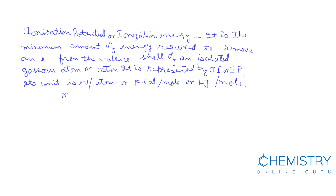Suppose we have a gaseous atom M. The energy required to remove an electron is ionization energy. The energy required to remove the first electron from an isolated gaseous atom is the first ionization energy, that is IE1. M gives M+ plus one electron, and that energy is equal to IE1.